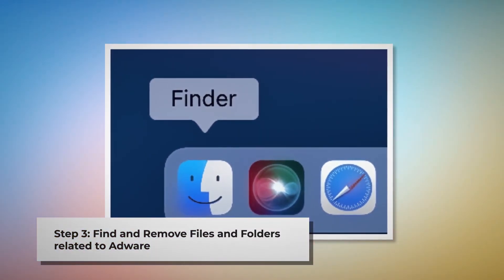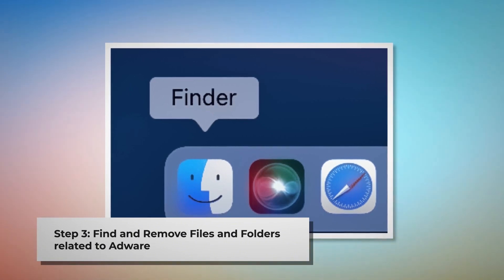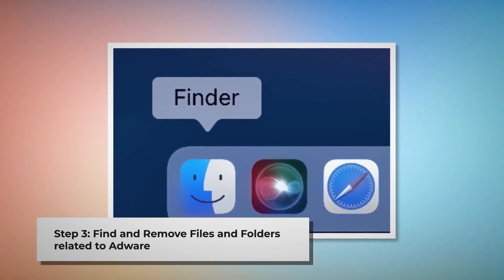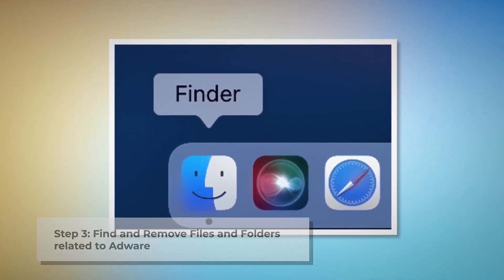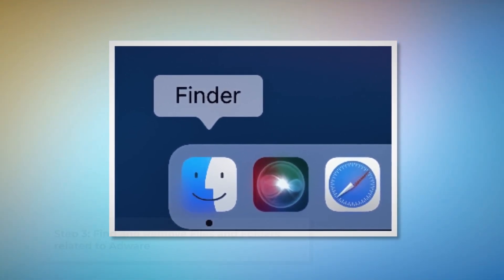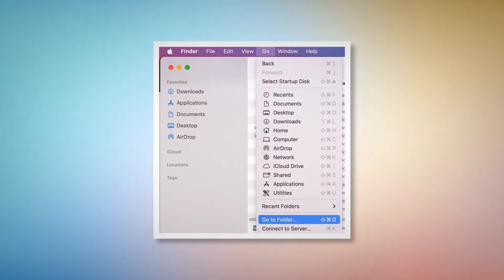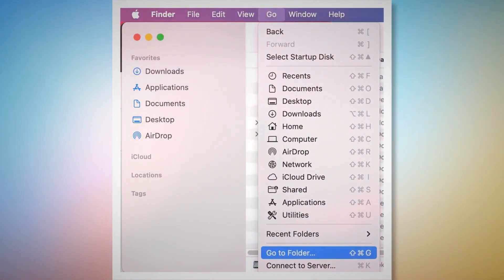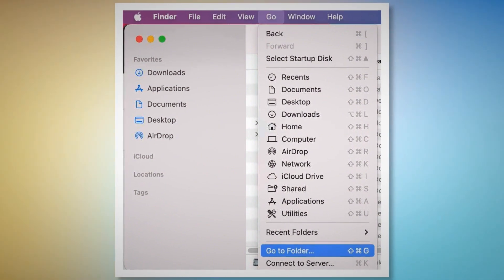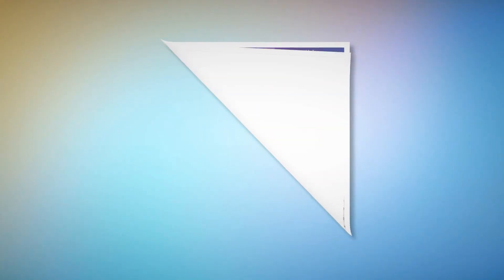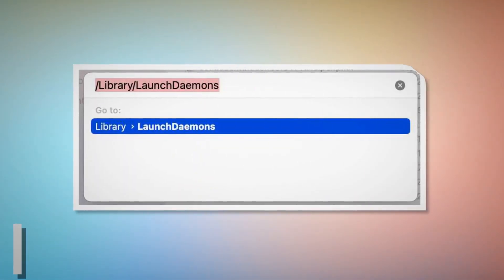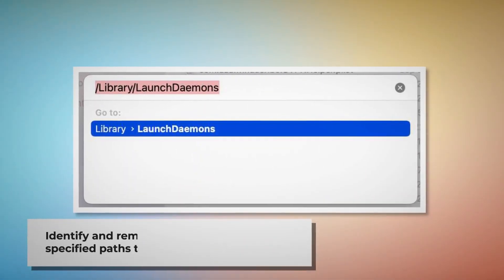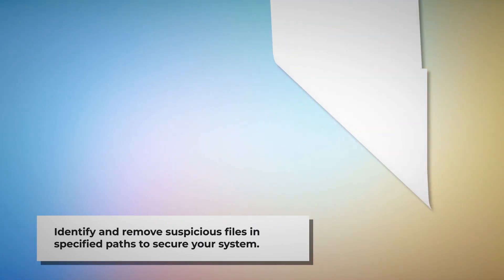Step three: find and remove files and folders related to adware. First, make sure you are in the Finder window. Once you are in Finder, click on Go at the top menu bar of your Mac, then click Go to Folder on the drop-down menu, as shown in the screenshot. Once you click Go to Folder, a pop-up window will appear.